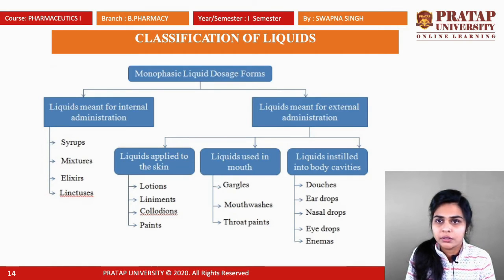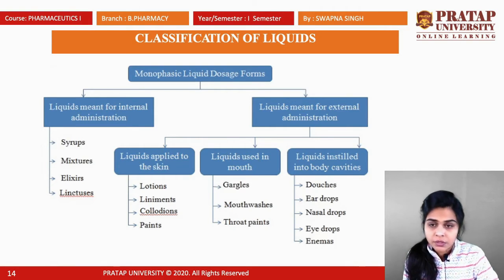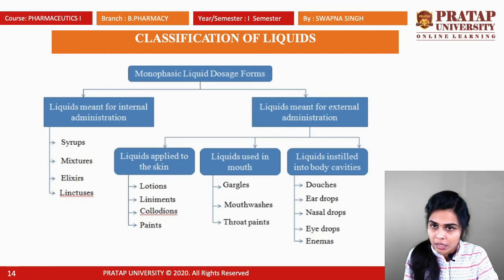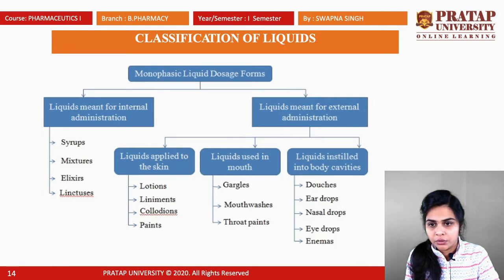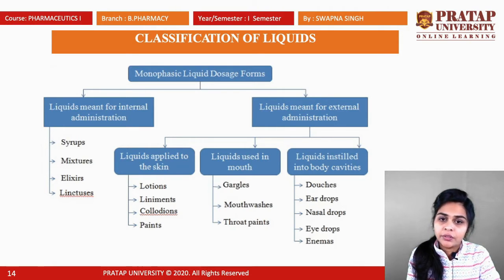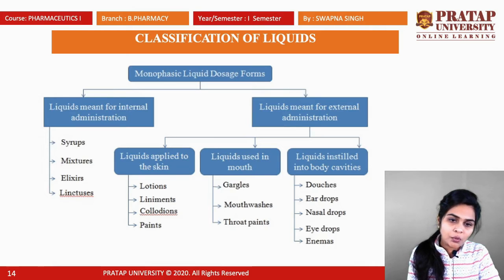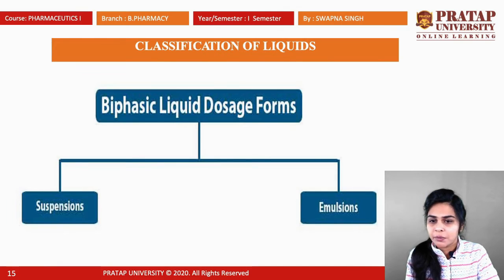Liquids are classified into monophasic and biphasic liquid dosage forms. Monophasic liquids for internal administration include syrups, mixtures, elixirs, and linctus. Monophasic liquids for external administration applied to the skin include lotions, liniments, collodions, and paints. Liquids used in the mouth include gargles, mouthwashes, and throat paints. Liquids instilled into body cavities include douches, ear drops, nasal drops, eye drops, and enemas. Biphasic liquid dosage forms include suspensions and emulsions.